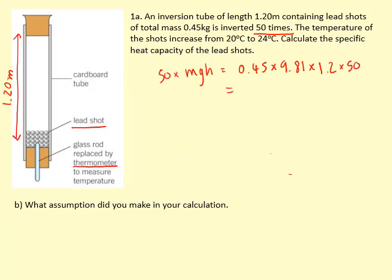That gives us an energy of 264.87 joules. All of this energy we're going to assume is going to heat up the lead shots. So we can use the specific heat capacity equation E equals mc delta T. In this case, we've got the energy from the previous section, and we've got the mass which is 0.45.